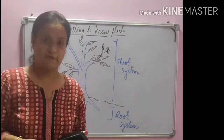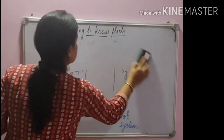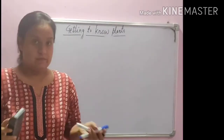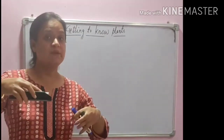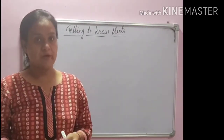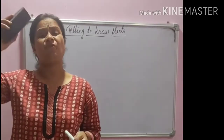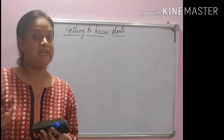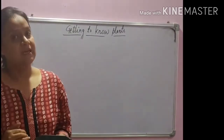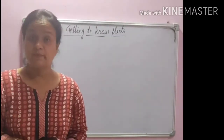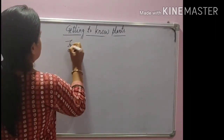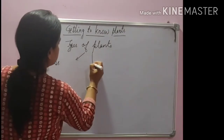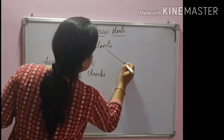Now let us see different types of plants. If you see plants around you, you find they are not all the same size — some are very small, some medium, some huge. Some grow for a short period, some live for a few years, some for many years. Depending upon their size, pattern of branching, and lifespan, plants are categorized into three categories: herbs, shrubs, and trees.